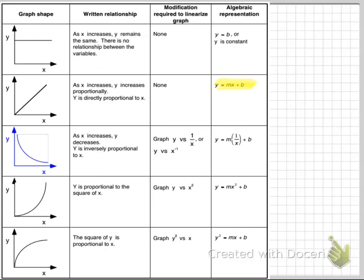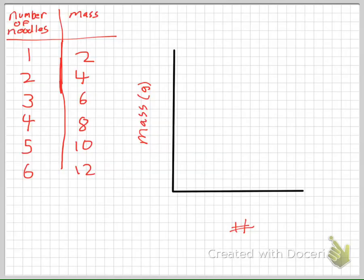That formula, y equals mx plus b, is the importance here. But in this situation, it's a straight line. So we don't need to do anything, because this is already linearized, if you remember back from what I said in the beginning. So because it's already linearized, there's nothing we need to do.